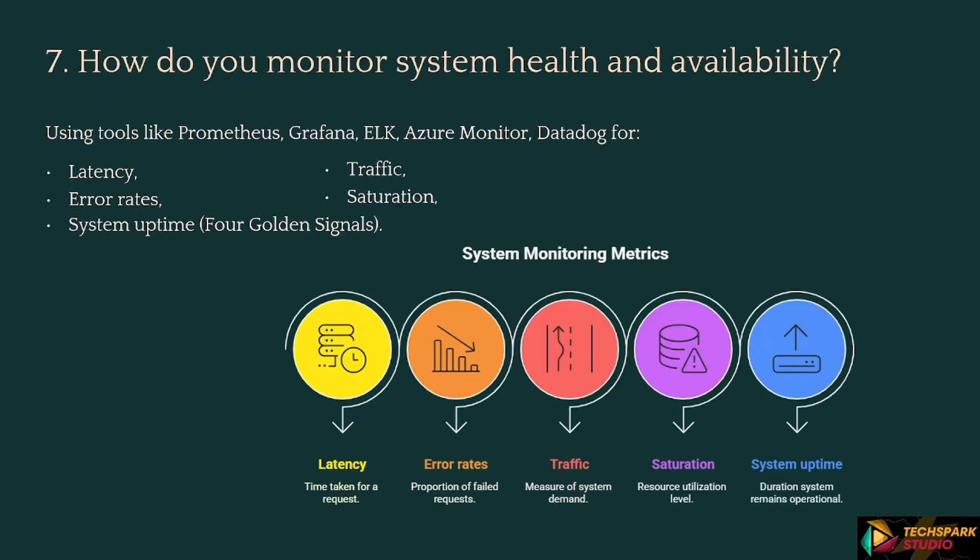Moving to the next one: How do you monitor system health and availability? Response: Using tools like Prometheus, Grafana, ELK, Azure Monitor, and Datadog for latency, error rates, traffic, saturation, and system uptime — the four golden signals.